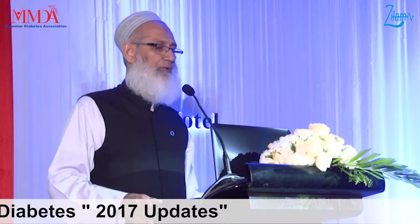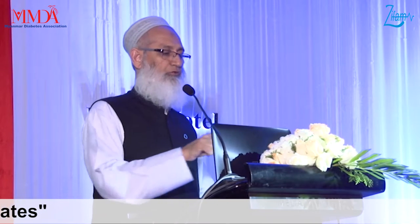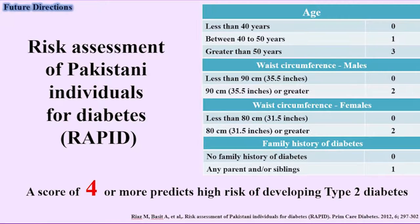This score is very valid for Pakistan. This is only a 30-second score — each of us in the audience can find out whether we are at risk of developing diabetes or not. We all know our ages: if less than 40, mark zero; between 40 to 50, mark one; more than 50, mark three. Then waist circumferences — men and women know their waist circumferences — you mark either zero or two. With family history, mark one; without family history, zero. So if your score comes to four, then we need to go and check — we may be IGT. This is a very simple way of finding out whether I am a borderline diabetic or pre-diabetic.